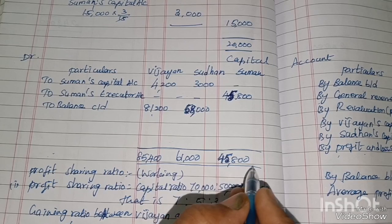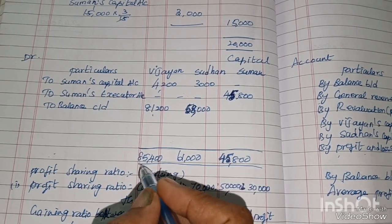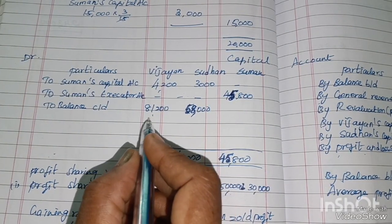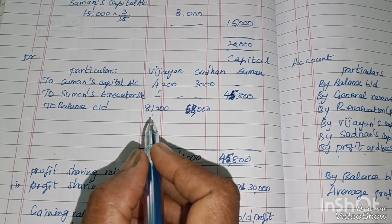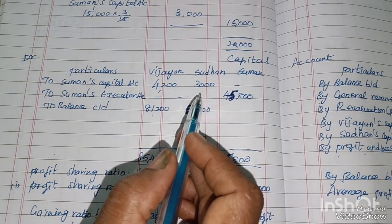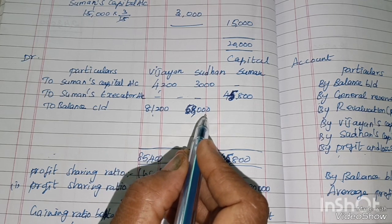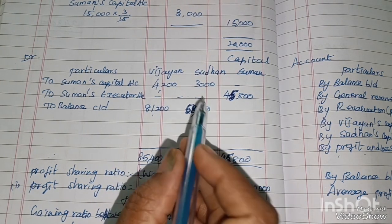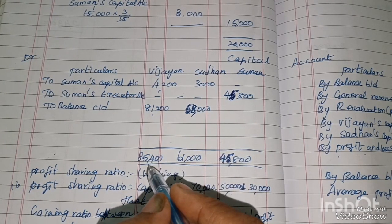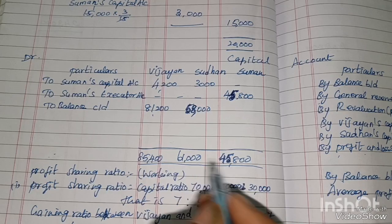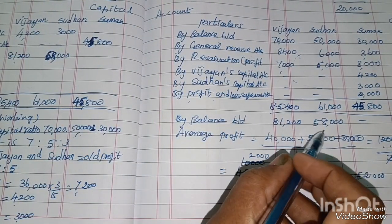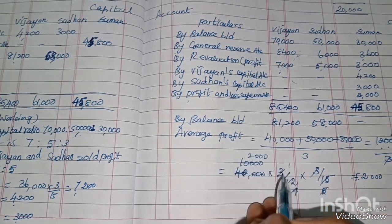Total of Vijayan's capital account is 85,400. After deducting goodwill contribution of 4,200, balance carried down is 81,200. Sudhan's total is 61,000. After deducting 3,000, balance carried down is 58,000. This completes the capital account.